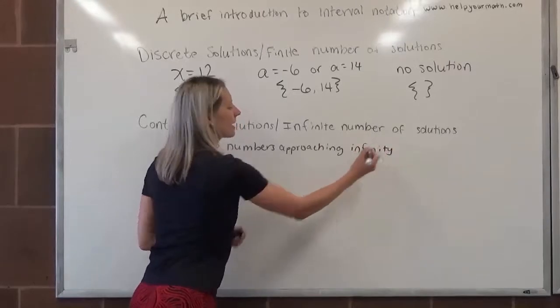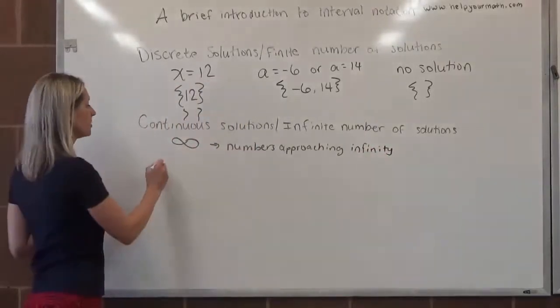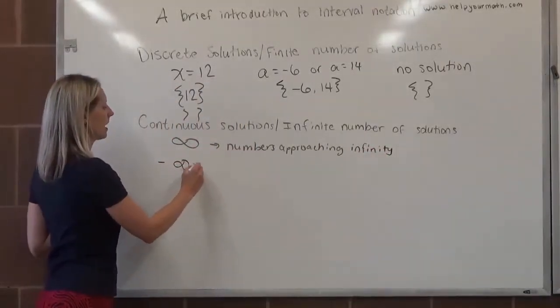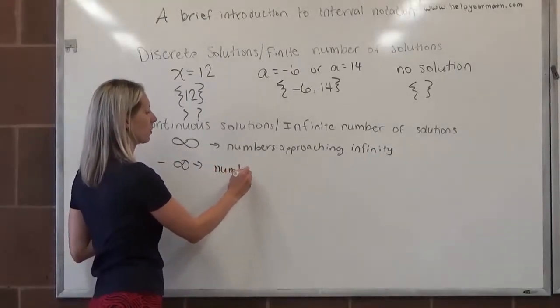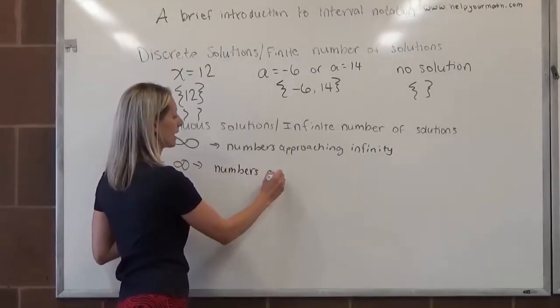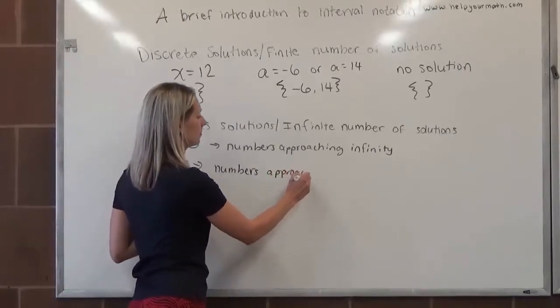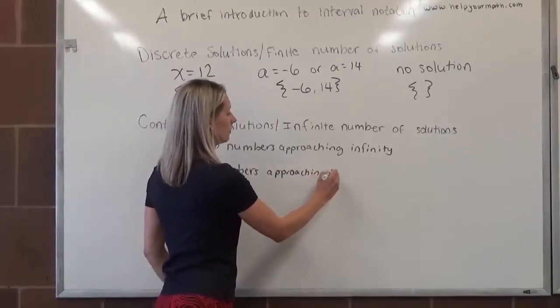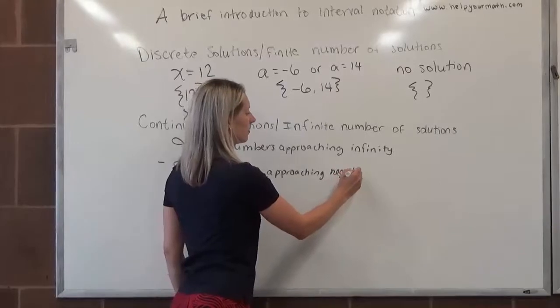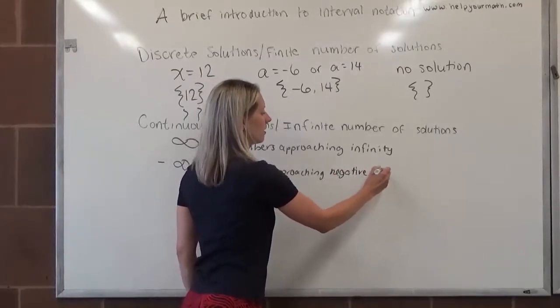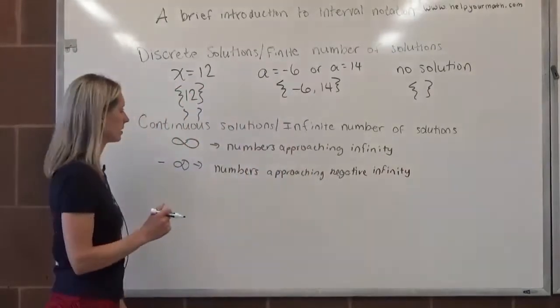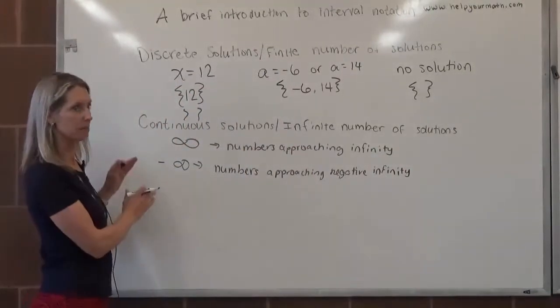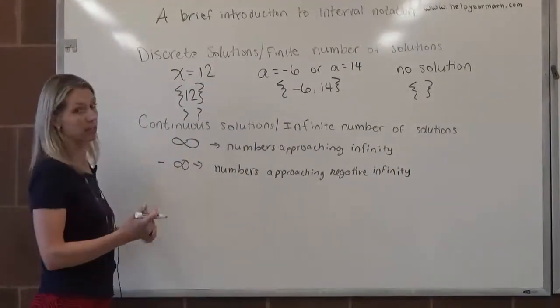If the solution set is getting smaller and smaller, we use negative infinity. Negative infinity indicates numbers are getting smaller without bound or approaching negative infinity. The infinity sign looks like an 8 turned 90 degrees. I'm not very good at drawing them, but basically it's just like a sideways 8.